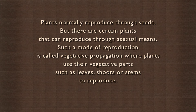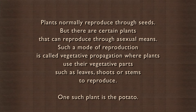Plants normally reproduce through seeds, but there are certain plants that can reproduce through asexual means. Such a mode of reproduction is called vegetative propagation, where plants use their vegetative parts such as leaves, shoots, or stems to reproduce. One such plant is potato. Let us see how this works.